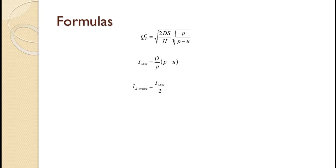With the basic EOQ model, average inventory was just the maximum inventory level of Q divided by 2. Likewise, here, average inventory is the maximum inventory level I sub max divided by 2.